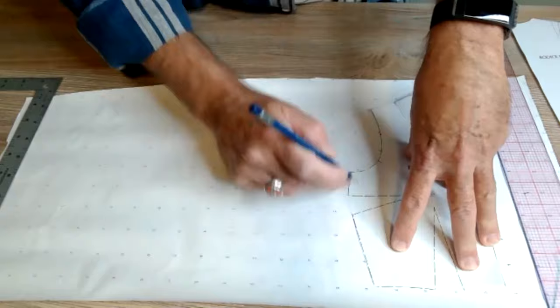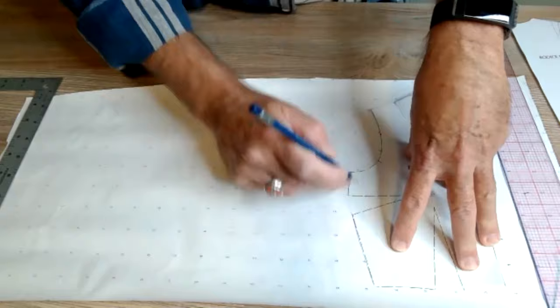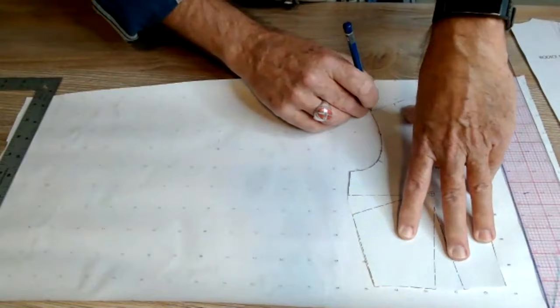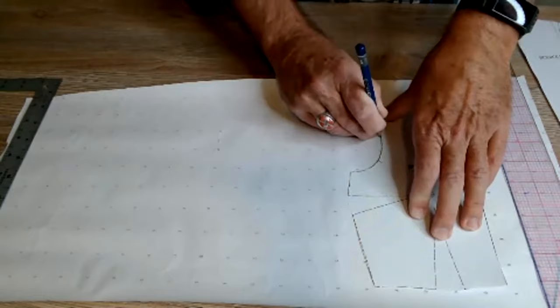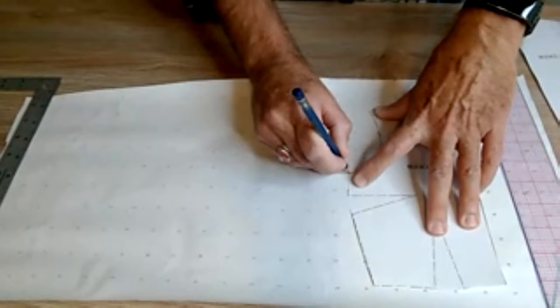What we're going to do first is we're going to outline the pattern. We are going to start at the place where we want our new dart to be, go down around, and I'm just tracing around the edges.